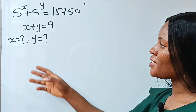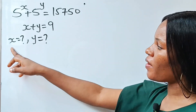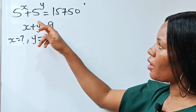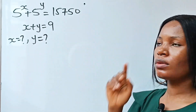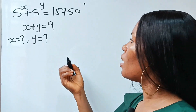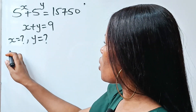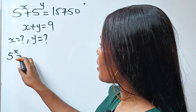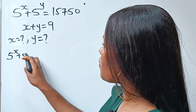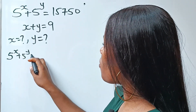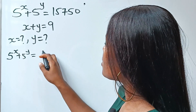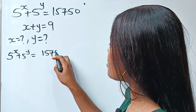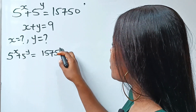Let's solve for the value of x and y in this particular equation. We have that 5 to the power of x plus 5 to the power of y is equal to 15,750.